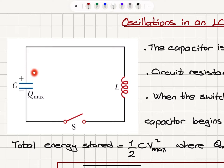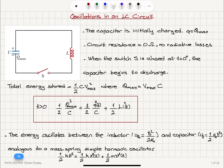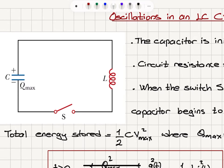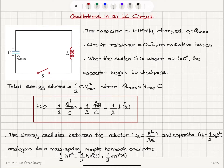This capacitor is initially charged, and there is a maximum voltage between its terminals; the charge stored is proportional to the voltage, Q equals C·Vc. Now there is no circuit resistance here — I'm neglecting any type of resistance in the circuit — and also no radiative losses, so electromagnetic waves will not propagate from the inductor or the capacitor.